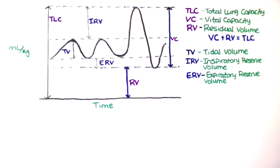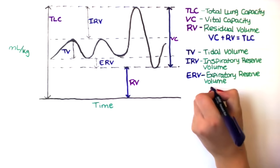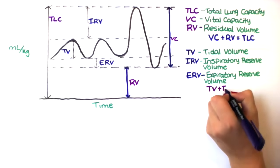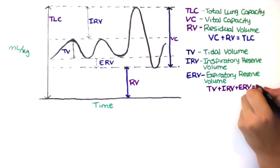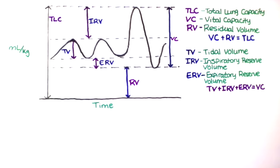Normally it's 20% of total lung capacity. Tidal volume plus inspiratory reserve volume plus expiratory reserve volume equals vital capacity.